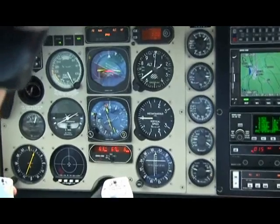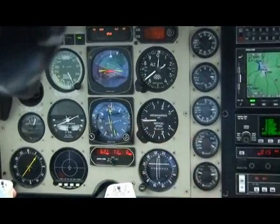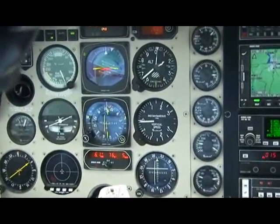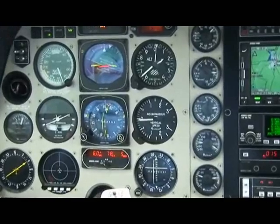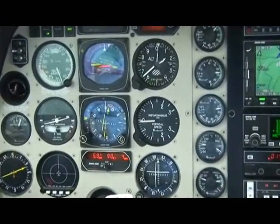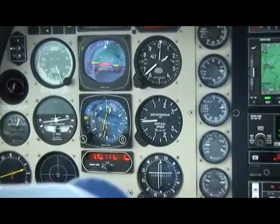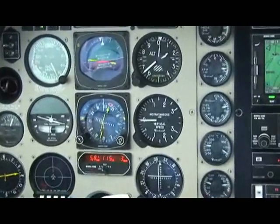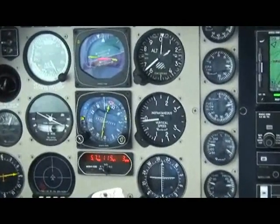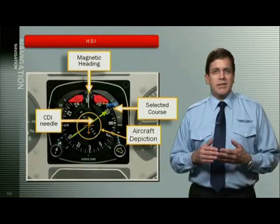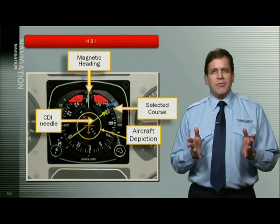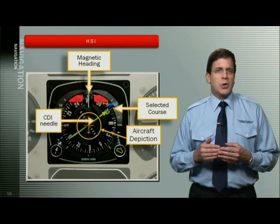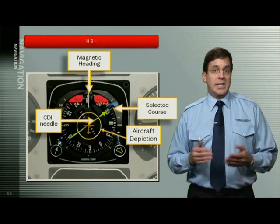The HSI also has a to/from indicator and a glide slope indicator. This indicator drops or rises into the instrument face when properly tuned when flying an instrument approach using a glide slope. When the glide slope needle is centered, you are flying on the glide slope at that moment. With all of this visual information on one instrument, it's easy to see why it's called the Horizontal Situation Indicator.